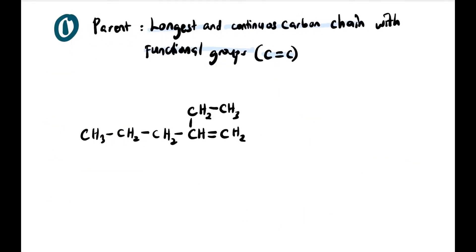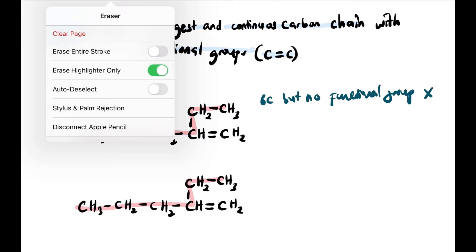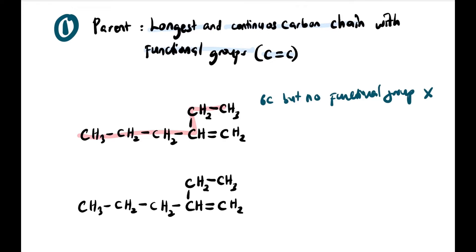First step adalah tentukan parent. Kalau kita tengok structure ni, kita kiralah the longest carbon chain adalah 1, 2, 3, 4, 5, 6 carbon. Tapi itu no functional group. Sedangkan syarat dia mesti ada functional group. Kalau dalam kes alkene ni, mesti ada functional group sudah. Jadi kalau kita tengok lagi sekali, selain daripada laluan itu, kita tengok laluan yang kedua — lurus sampai hujung yang ada functional group tu. Yang ini ada 5 carbon, tapi with functional group. Jadi dia memenuhi syarat ada functional group. So kita akan prefer yang bawah ni sebagai parent.